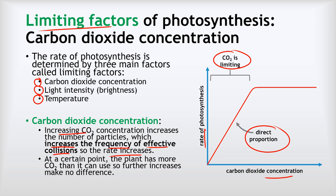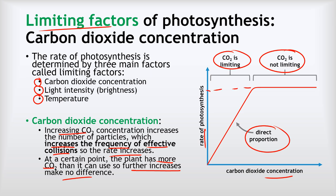However, at a certain point the plant has more CO2 than it can use, so further increases make no difference — that's what the flat section of the graph shows. On this flat section we say carbon dioxide is not the limiting factor. Importantly, at this flat section the rate of photosynthesis is actually at its maximum — it has not stopped, it's just not getting any faster.